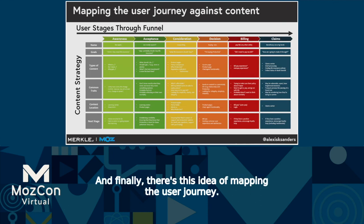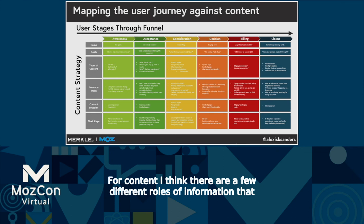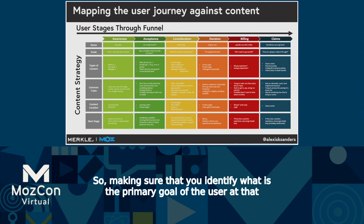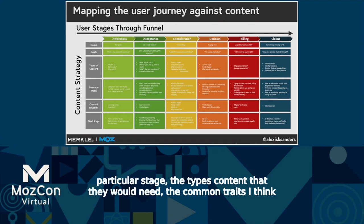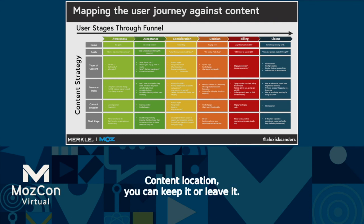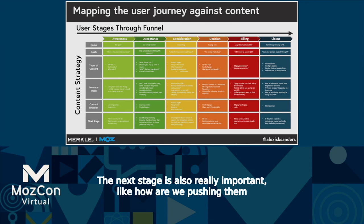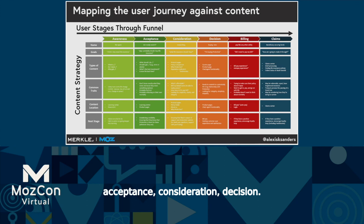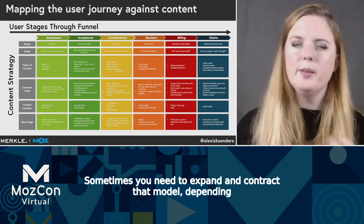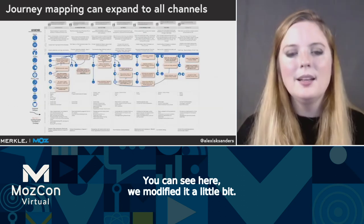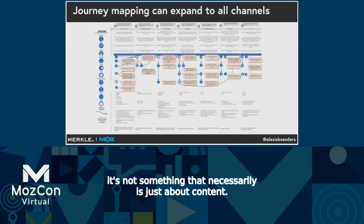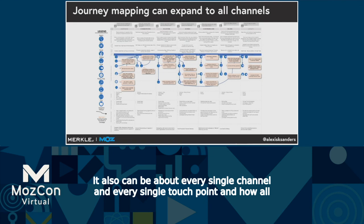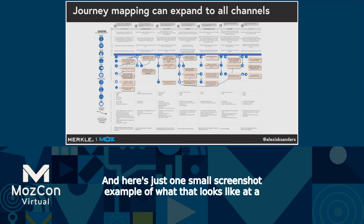Finally, there's this idea of mapping the user journey. For content, I think a few rows of information are really important: what is the primary goal of the user at that particular stage, the types of content they would need, the common traits, content location, and how we're pushing them down the funnel. Starting with columns of awareness, acceptance, consideration, and decision makes sense — though sometimes you need to expand and contract that model depending on the audience. Journey mapping can also expand to all channels — not just content, but every single touch point and how all those points engage.